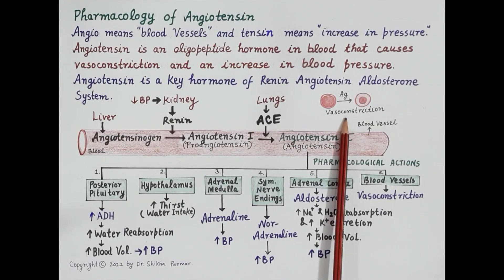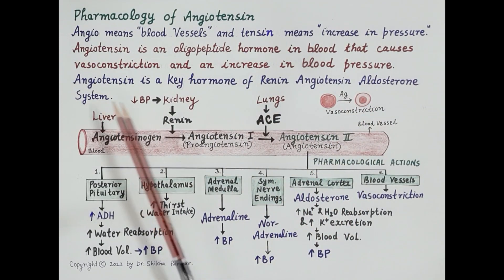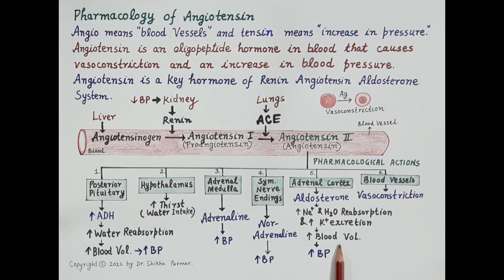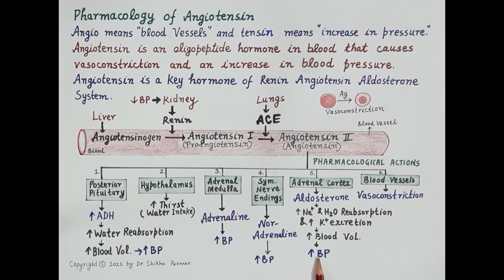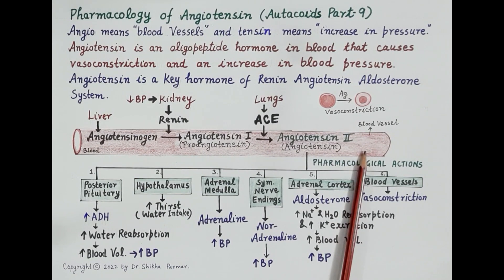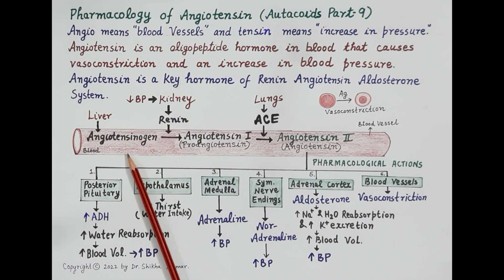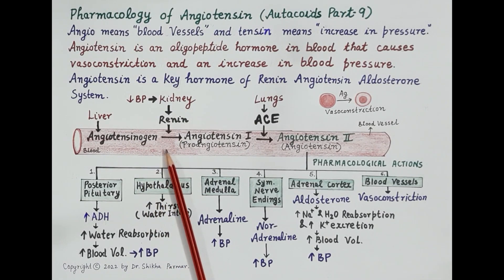Angiotensin is a key hormone of the renin-angiotensin-aldosterone system, which plays a very important role in regulating blood pressure and blood volume. Looking at this figure, a fall in blood pressure stimulates the kidney to release renin, while the liver produces angiotensinogen. Both renin and angiotensinogen are released into the blood.